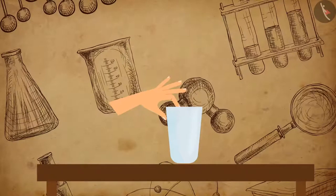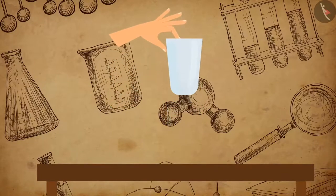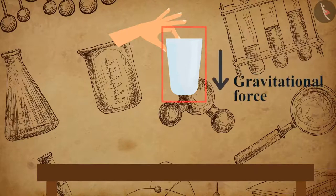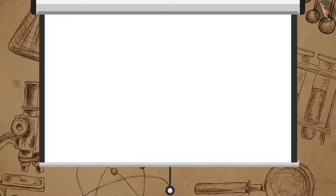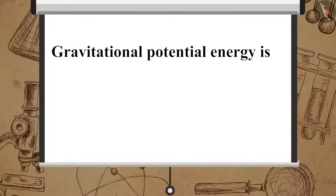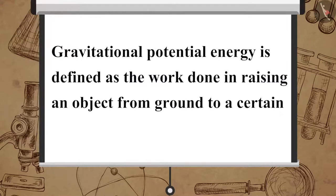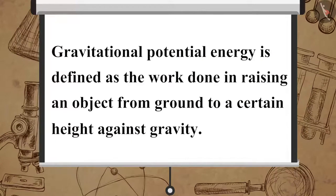Now, let us understand what happens to the potential energy of an object when raised to a certain height. When an object is raised to a certain height, work is done on it by us against gravitational force, due to which an object possesses more energy when raised to a greater height. This energy possessed by the object is termed as gravitational potential energy. Gravitational potential energy is defined as the work done in raising an object from ground to a certain height against gravity.